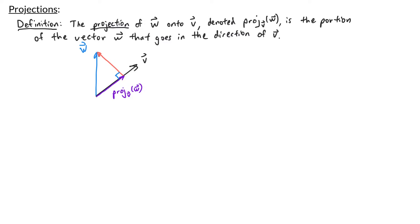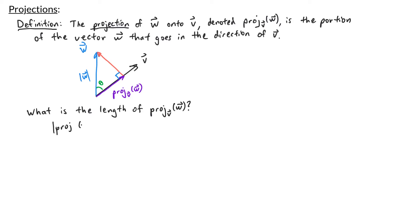So let's try to find this purple vector. First let's try to find its length. In our picture here we have a right triangle, and we know that the hypotenuse is the length of w. Now let me label the angle between v and w theta. From trigonometry we know that cosine of theta is equal to the adjacent divided by the hypotenuse. So the length of the projection of w onto v is equal to the length of w times the cosine of theta.